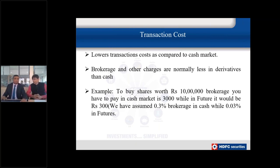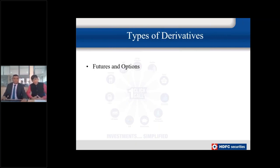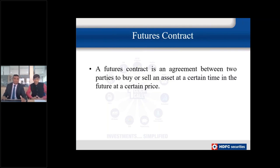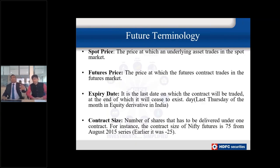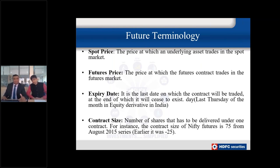There are two types of derivatives famous in India: futures and options. A futures contract is an agreement between two parties to buy and sell an asset at a certain time in the future at a certain price. To understand futures, four key terms are important. First is the spot price — the cash price of the underlying asset. For example, if Reliance Industries' cash price is ₹1,000, that is the spot price. The futures of Reliance will trade at a slight premium to the spot price.